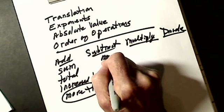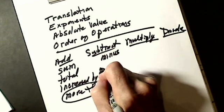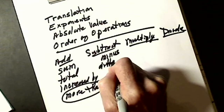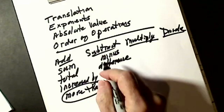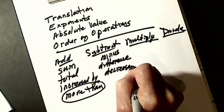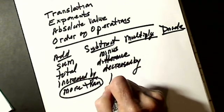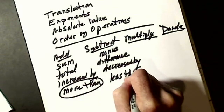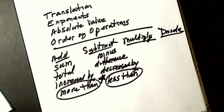For subtract: if you saw 'minus,' you would know to subtract. If I say 'find the difference,' you would also know to subtract. The opposite of 'increased by' is 'decreased by' — if something is decreased by something, it's going to go down. Then we've got 'less than,' and that's the one people get wrong through the whole course.